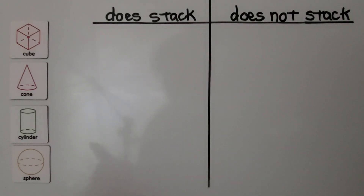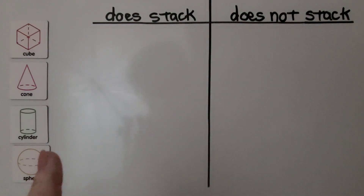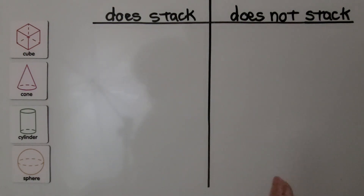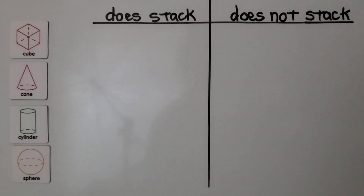We need to sort these three-dimensional shapes into a set that can be stacked to make a tower and a set that cannot be stacked to make a tower. If a three-dimensional shape has a flat surface on its bottom and top, it can be stacked. It needs two flat surfaces to stack.